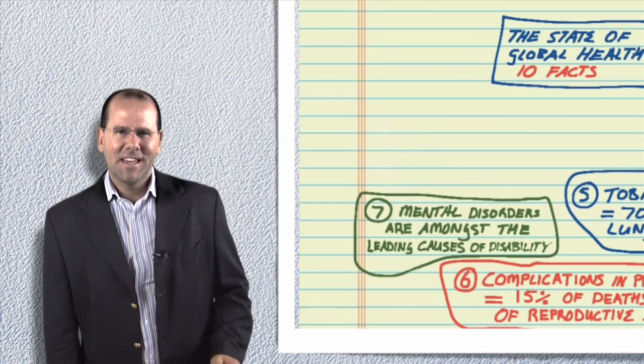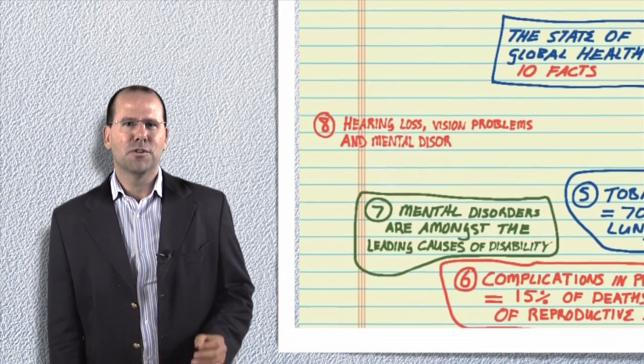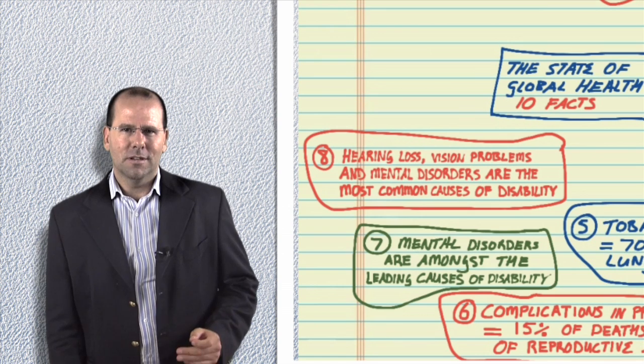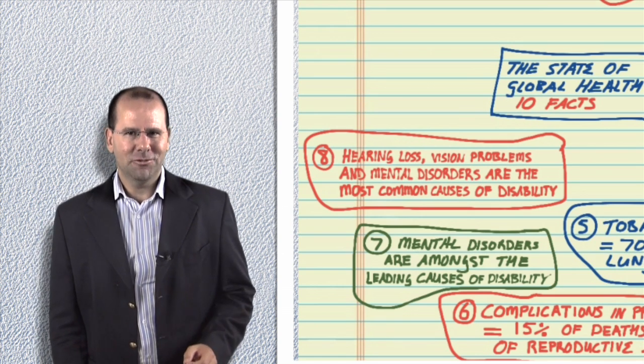Fact number eight: hearing loss, vision problems, and mental disorders are the most common causes of disability worldwide. These disorders affect people's lives and livelihoods but many are easily treatable.